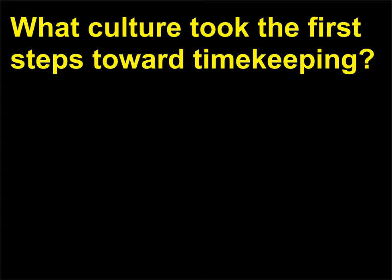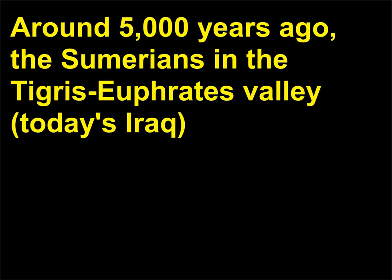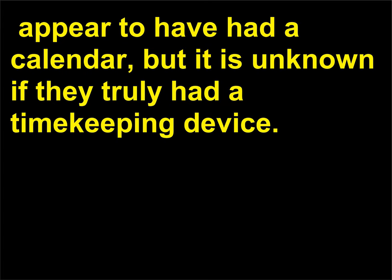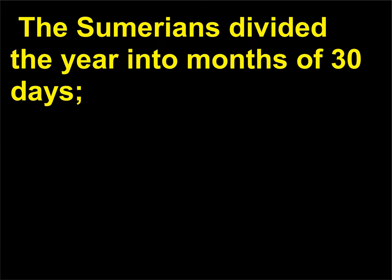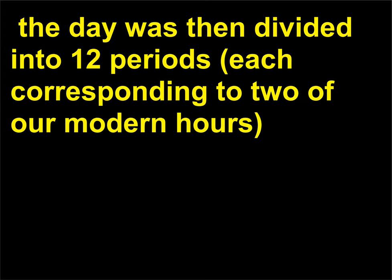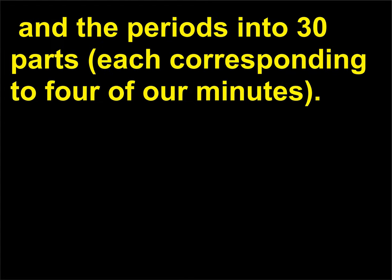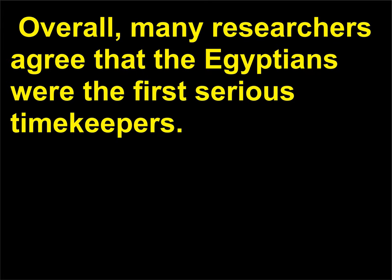What culture took the first steps toward timekeeping? Around 5,000 years ago, the Sumerians in the Tigris-Euphrates Valley (today's Iraq) appear to have had a calendar, though it is unknown if they truly had a timekeeping device. The Sumerians divided the year into months of 30 days, the day into 12 periods each corresponding to 2 of our modern hours, and the periods into 30 parts each corresponding to 4 of our minutes. Overall, many researchers agree that the Egyptians were the first serious timekeepers.